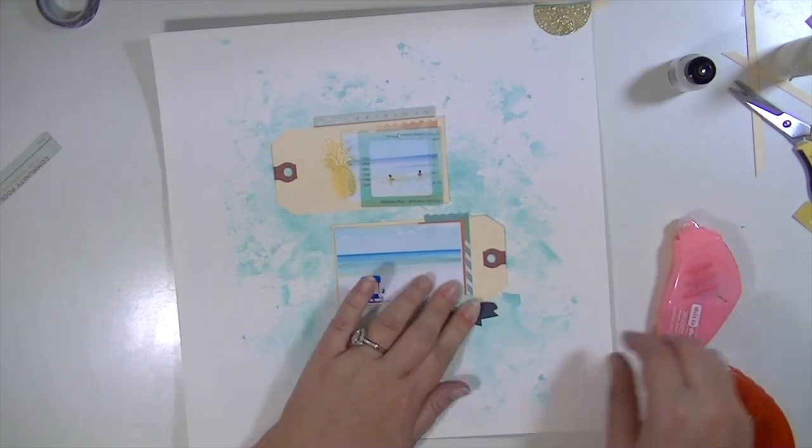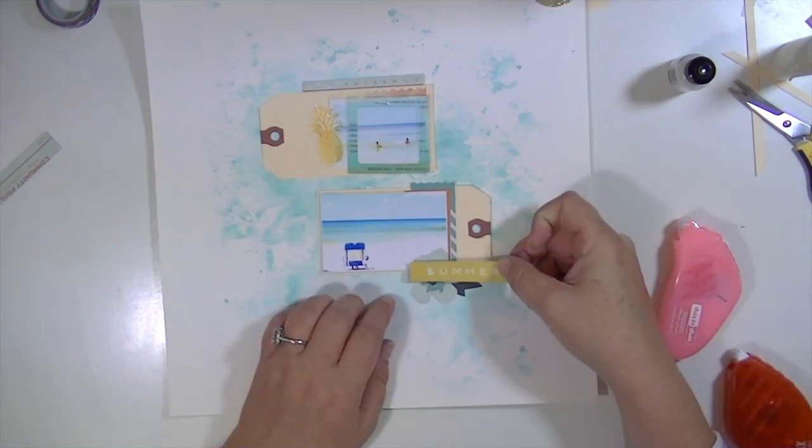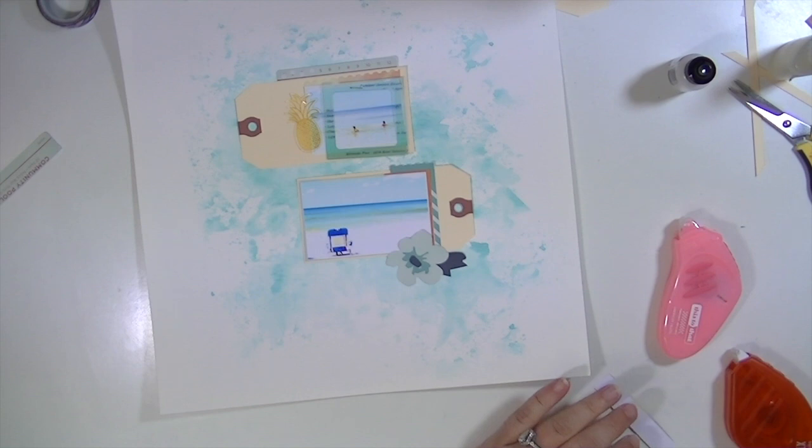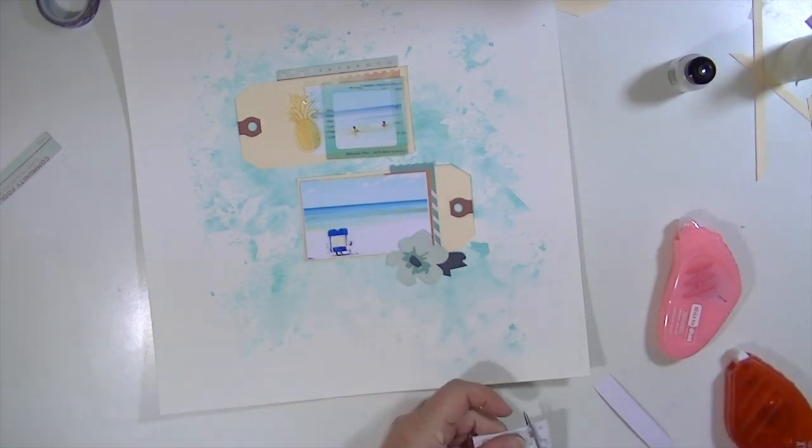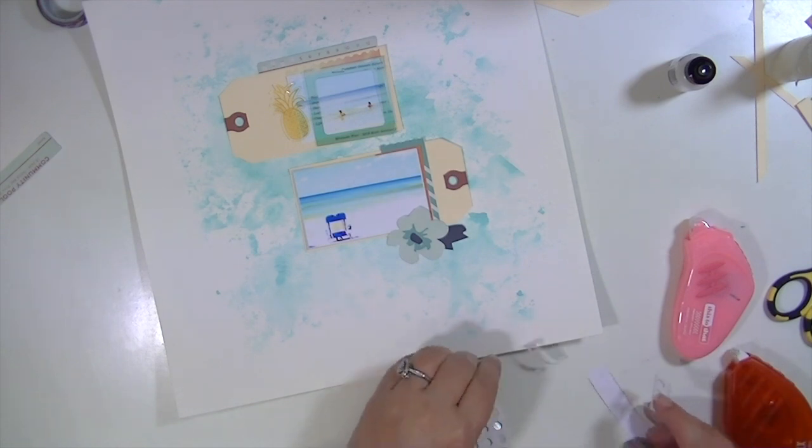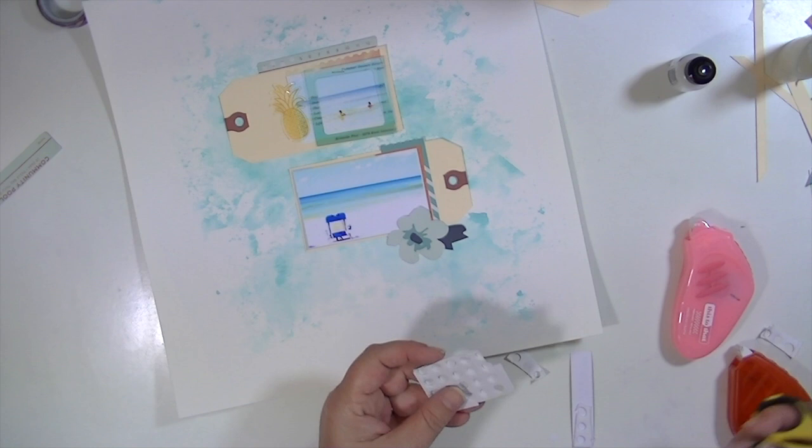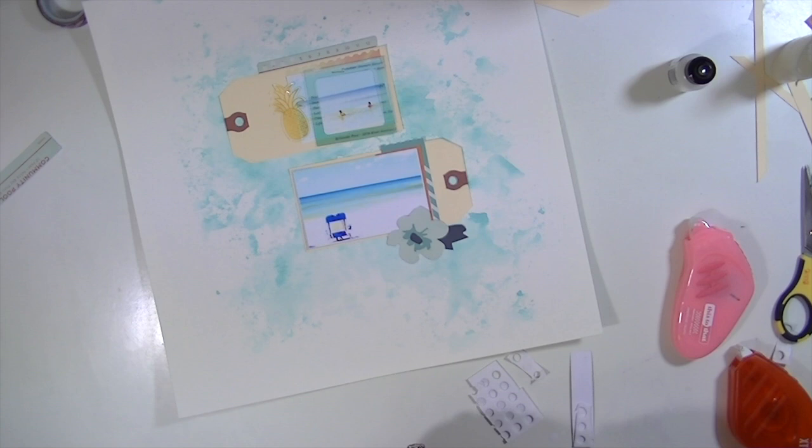I'm just sticking down this little flower and then I'm going to put the little summer ephemera piece on some foam adhesive. I'm just using the leftover packaging - all the dots out of that are gone, I've used them already. I'm just using the extra packaging of the foam adhesive.